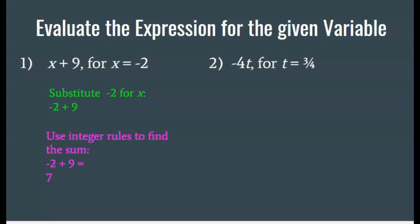In number 2, it says negative 4 times t. That's what negative 4t means, for t equals three-fourths. Negative 4 times three-fourths. You can multiply that on your calculator, or I can put negative 4 over 1 and multiply straight across. That gives me negative 12 over 4. Negative 12 over 4 simplifies to negative 3. Remember, when dividing, if the signs are different, I get a negative. We learned that in the last lesson.